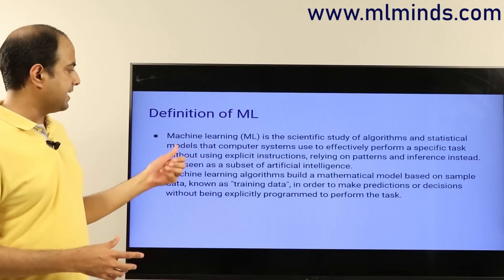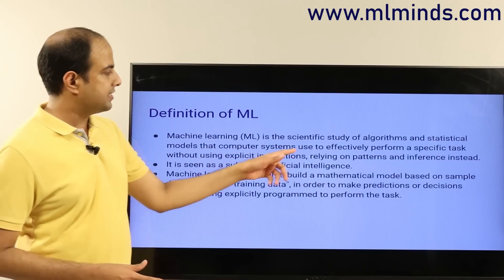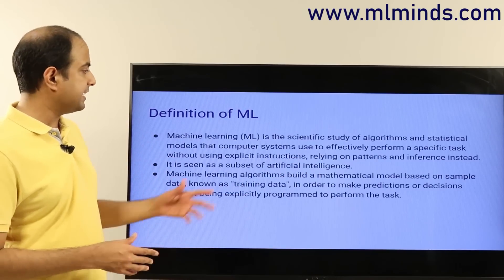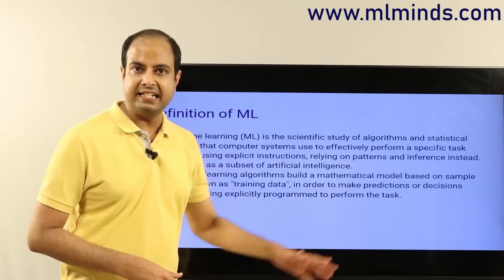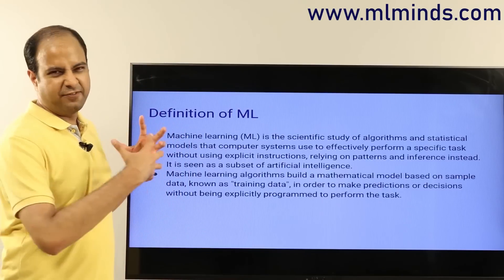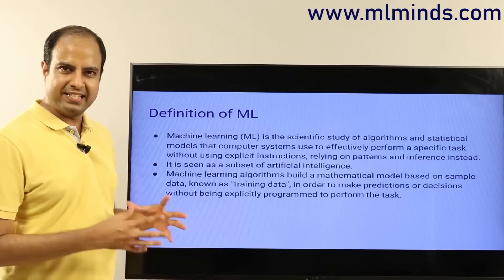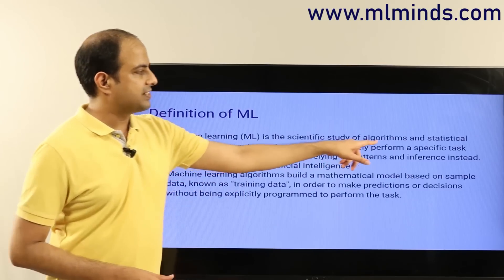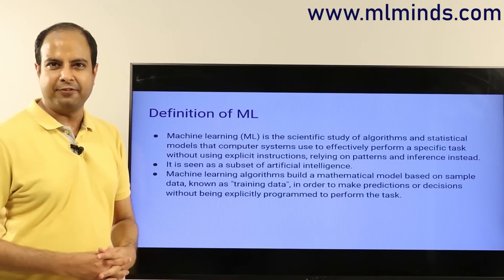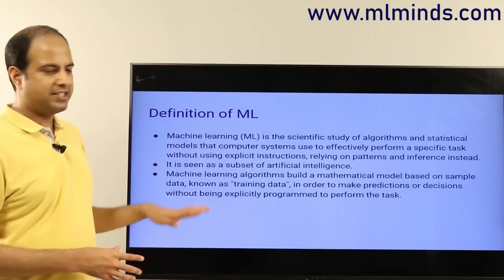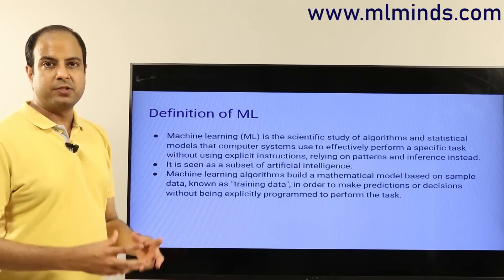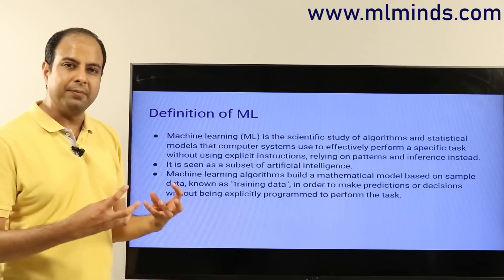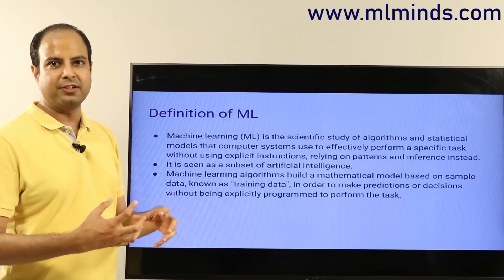To define machine learning properly: it is the scientific study of algorithms and statistical models that computer systems use to effectively perform a specific task without using explicit instructions, relying on patterns and inference instead. That's a large definition, so let's understand it piece by piece. First, it's a scientific study of algorithms — it's a science. It involves algorithms and statistical models, which you call models.